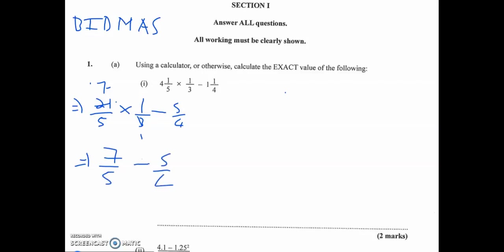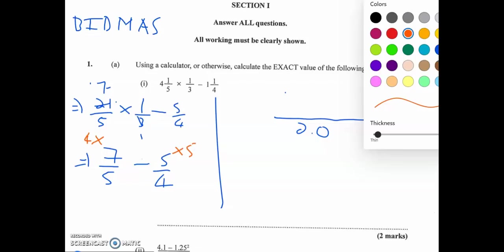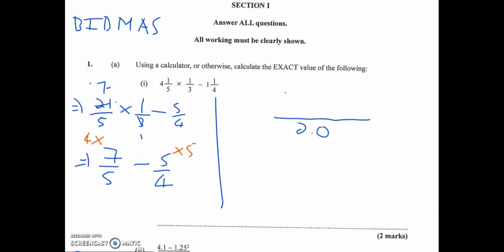So we have 7/5 minus 5/4. To subtract, I need the LCM of 5 and 4, which is 20. Five into 20 goes four, multiply by seven gives 28. Four into 20 goes five, multiply by five gives 25. So we have 28 minus 25 over 20, which is 3/20.